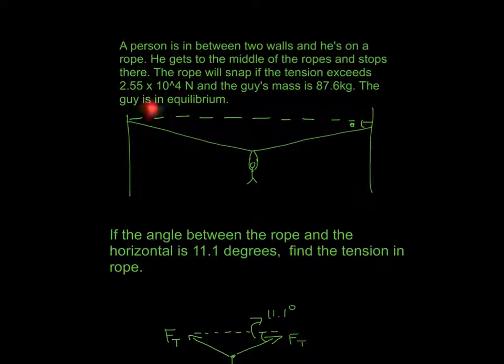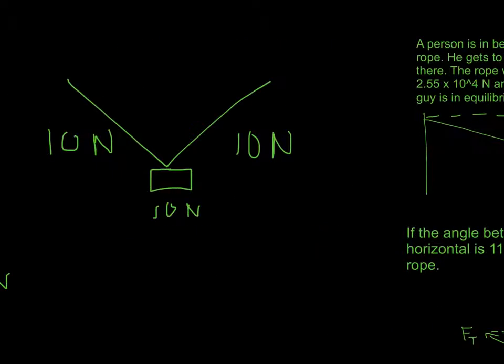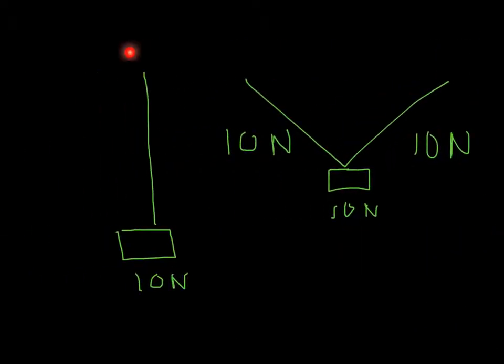So the tension will actually be the same on either side. It's not like it's going to be divided. And that's because if you had one length of rope and it was supporting 10 newtons, if you bent that rope, it would actually be the same on either side. And that's because it's still connected in the middle.